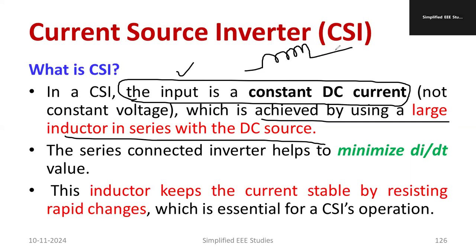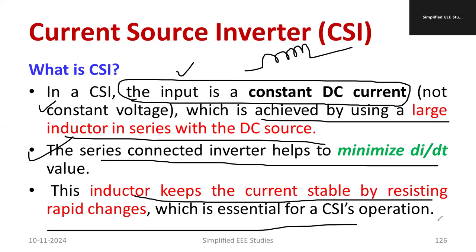The inductor opposes the change in current. You might have heard about di/dt. The series inductor reduces the value of di/dt. Similarly, we can say the inductor keeps current stable by resisting rapid changes.